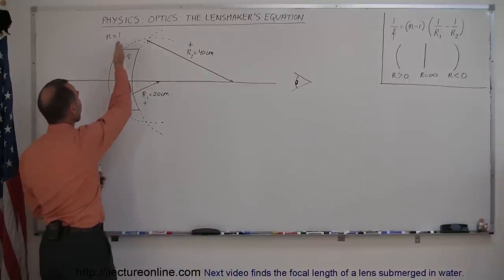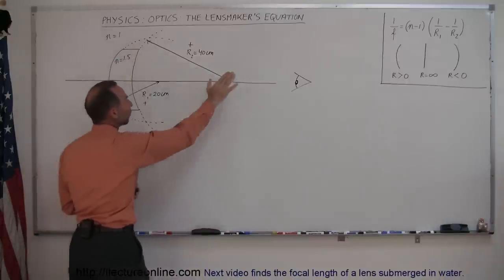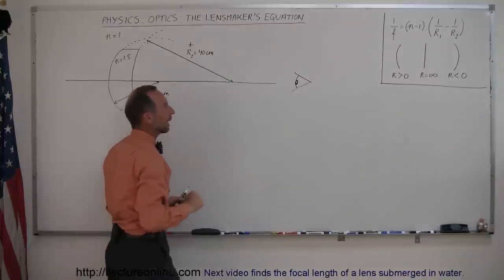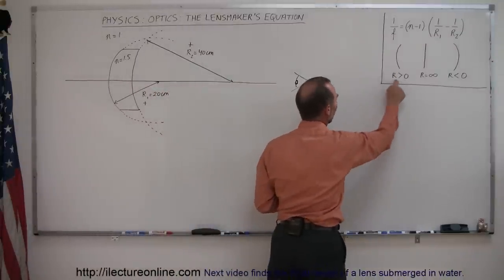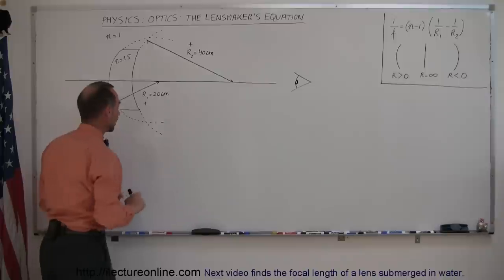Notice that in both cases, the front and the back side of the lens curve away from the observer, and when it curves away from the observer, we call the radius of curvature positive.